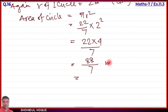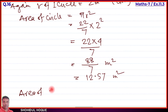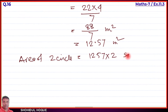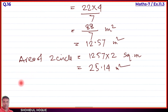The area of one circle = π r² = 3.14 × 2² = 3.14 × 4 = 12.57 meter square. Since two circles are removed, total area of two circles = 12.57 × 2 = 25.14 meter square.